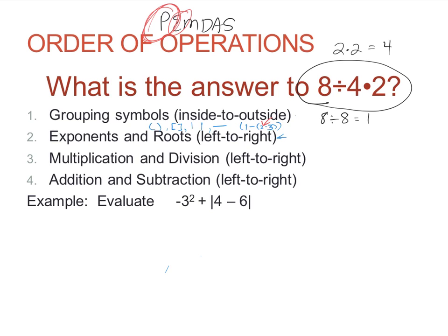Next in order would be multiplication and division. Although PEMDAS always has M before D, that's not necessarily true — multiplication and division tie in order of importance. So if you have both, you should work left to right. Looking at our example, eight divided by four times two: since division and multiplication tie, we work left to right, doing division first, and we get an answer of four.